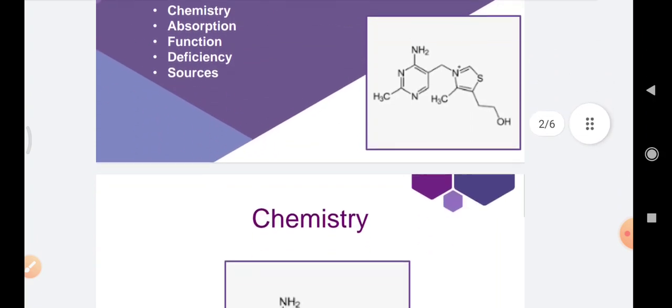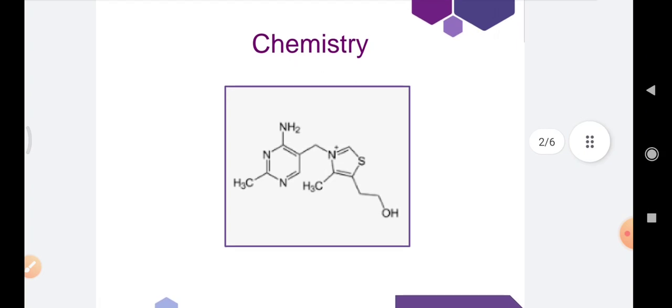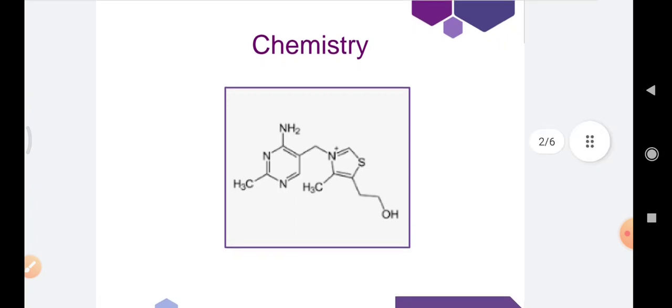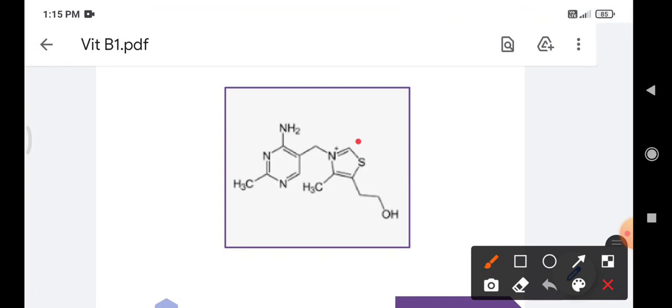Coming to the chemistry, Vitamin B1 is also known as thiamine. This is the structure of thiamine, and thiamine is a heat labile sulfur-containing vitamin. This is the sulfur which is present in the structure of thiamine.